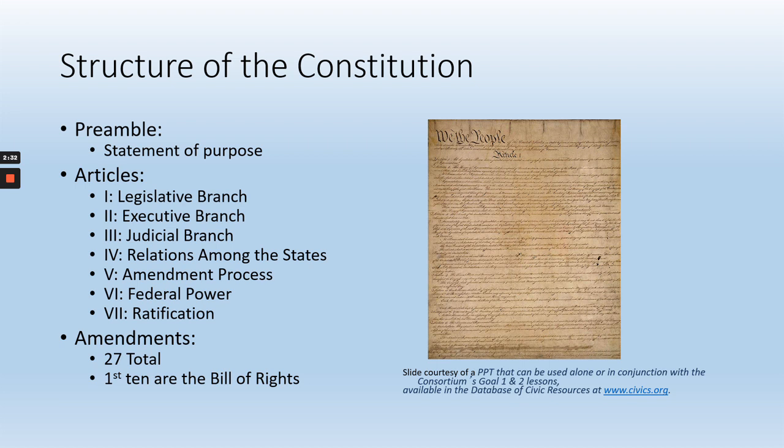The Constitution starts with the legislative branch in Article 1. Then in Article 2, it talks about the executive branch — the president — and sets out the rules for the presidency. Article 3 is the judicial branch. Article 4 talks about relations among the states. Article 5 explains how to amend the Constitution. Article 6 discusses the extent of federal power. And finally, Article 7 discusses ratification.